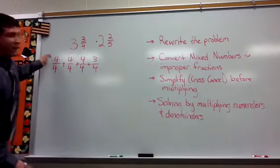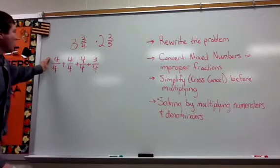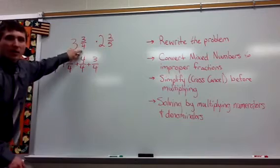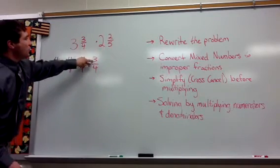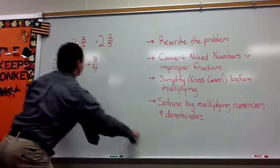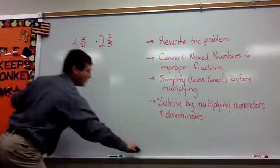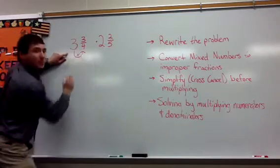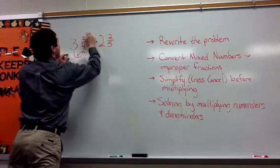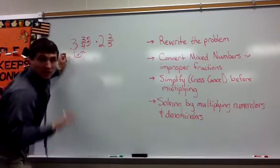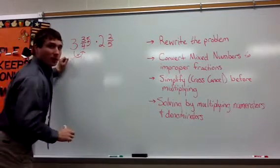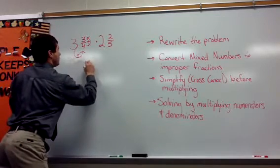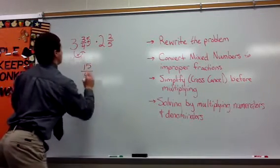Instead of doing this repeated addition, what we're going to do is multiply the whole number by the denominator, and then add the final numerator. So: three times four, plus the three in the numerator, is equal to fifteen-fourths.